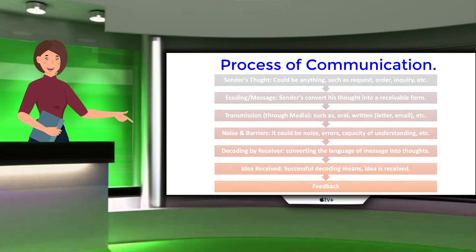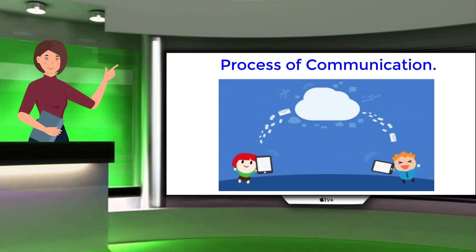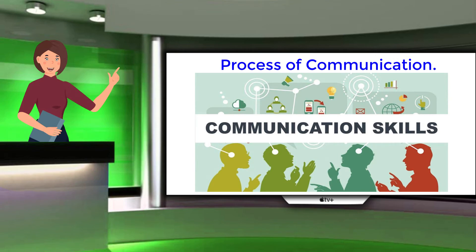Every communication involves at least one sender, a message, and a recipient. This may sound simple, but communication is a very complex subject. The transmission of a message from sender to recipient can be affected by a huge range of things. These include our emotions, the cultural situation, the medium used to communicate, or even our location. That's why good communication skills are considered so desirable by employers around the world. Good communication means an accurate, effective, and clear way of expressing thoughts.